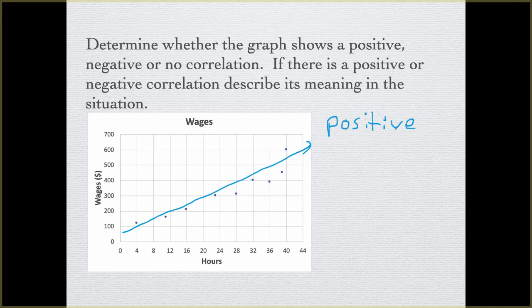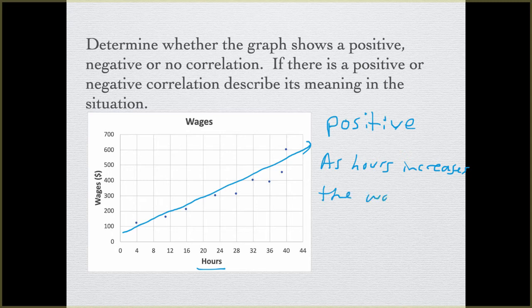We have hours as our independent variable and wages as our dependent variable. So as hours increase — as our independent increases — the wages also increase. So we have a positive correlation, and this is why: as our hours are going up, our wages are going up.